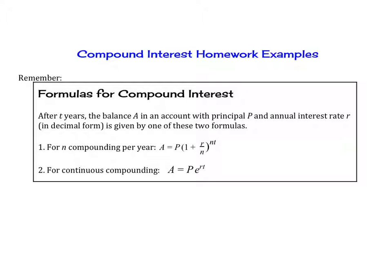We know that after t years the balance A in an account with principal P and annual interest rate r in decimal form is given by these two formulas. For the first one, that's where we're compounding n times per year, and for number two, that's continuous compounding.